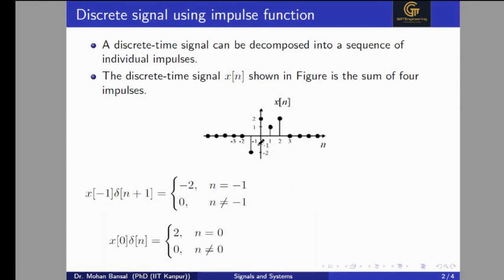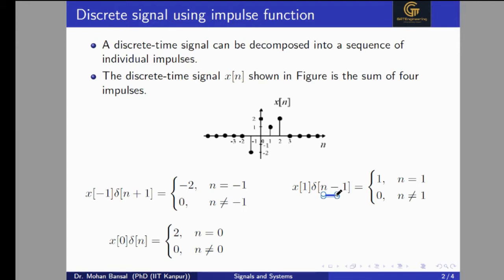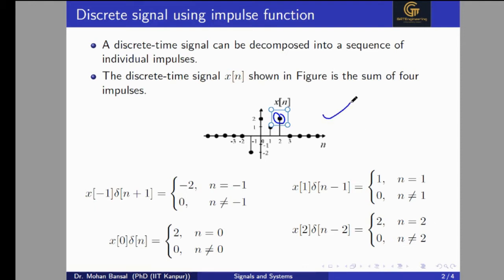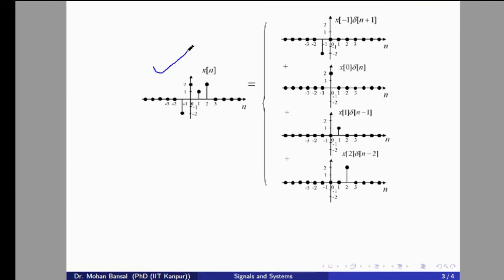In a similar way, for n equal to zero we write x(0)·δ(n), its value is two for n equal to zero and zero otherwise. For n equal to one, the magnitude value is one, so we write x(1)·δ(n-1), which is one for n equal to one and zero otherwise. Similarly we write x(2)·δ(n-2) for the last impulse, which has value two for n equal to two. Adding all four impulses gives the desired signal x[n].